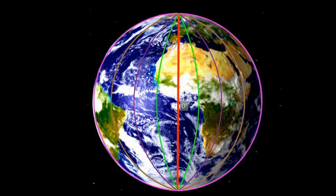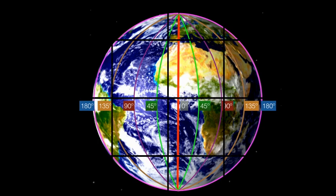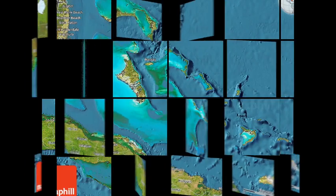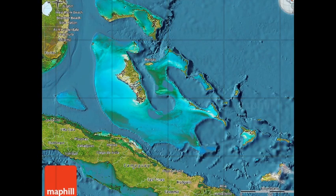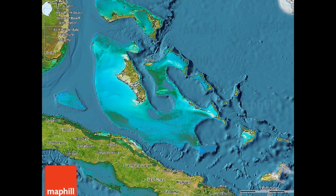Just like with the equator, the further away you travel from the Prime Meridian, the higher your longitude becomes, until you reach 180 degrees. So now that we know all about longitude and latitude lines, let's find the Bahamas.